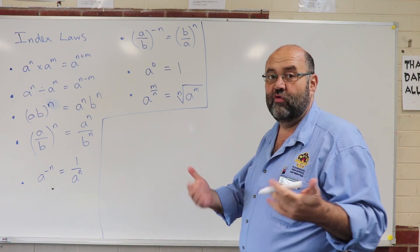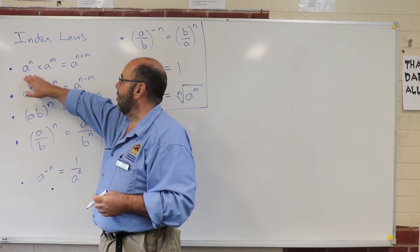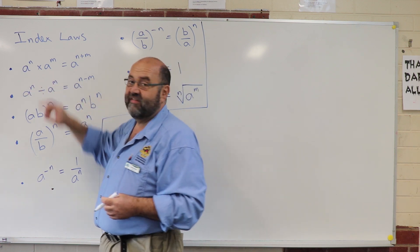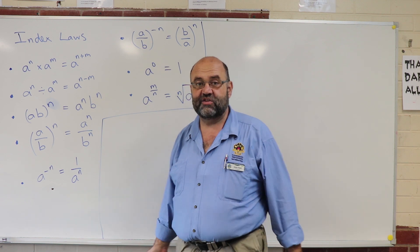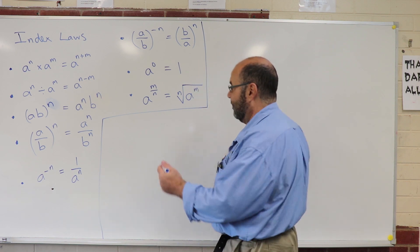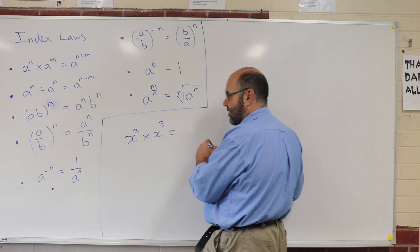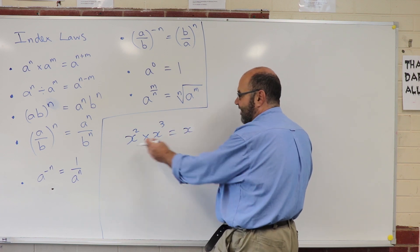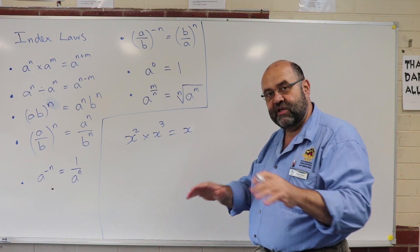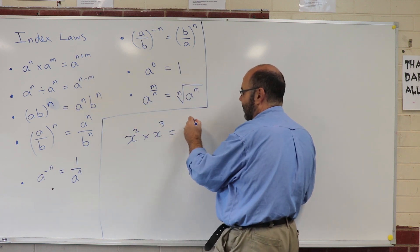What do they tell us? Let me go through simple examples for each of them. If I'm multiplying two terms with the same base — so both have got a base of A — the base does not change. All I do is add the powers. So for example, if I've got x squared times x cubed, the x stays as x. The base does not change. What does happen is I add the powers: 2 plus 3 is 5.